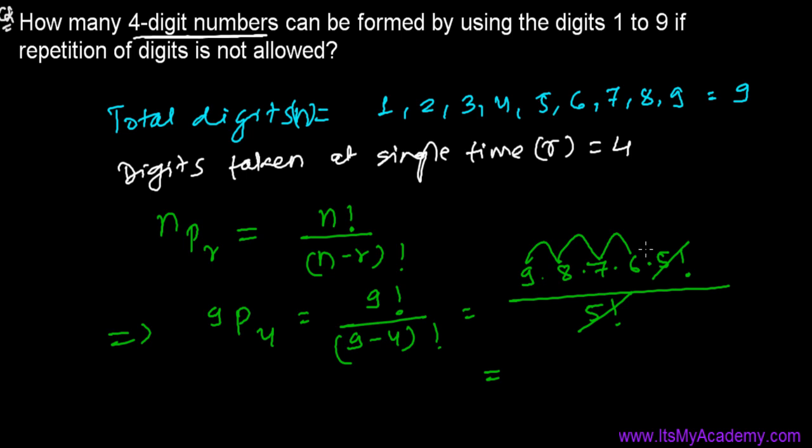I have to use calculator and my calculator is giving me 3024. So there are 3024 four-digit numbers that we can form using the digits 1 to 9 without repetition of the digits.